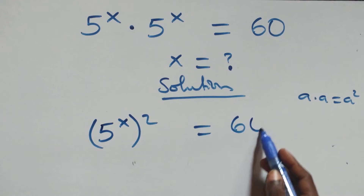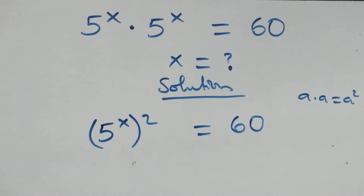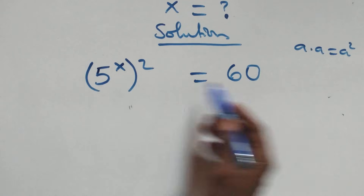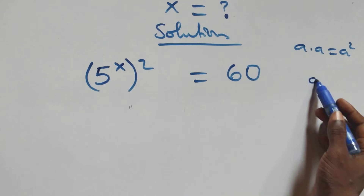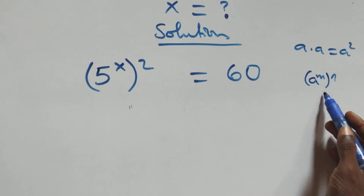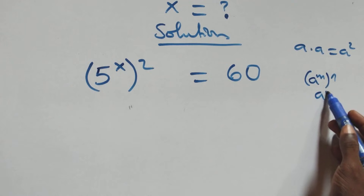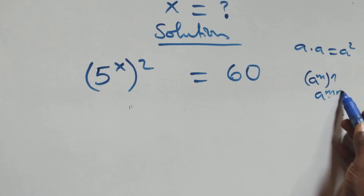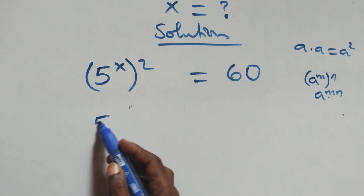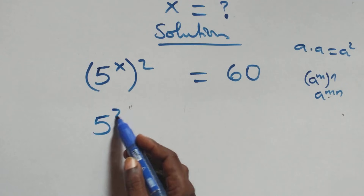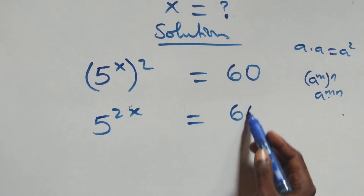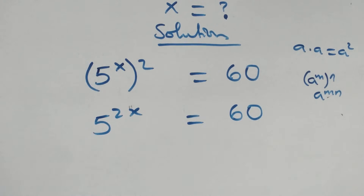This equals 60 from here. The next step: this also follows when we have a raised to power m raised to power n, the same thing as a raised to power m·n. At this here, we have 5 raised to power 2x equals to 60 from here.